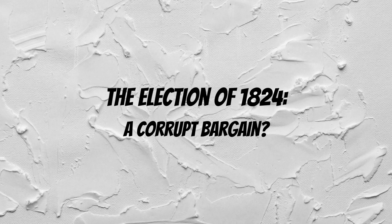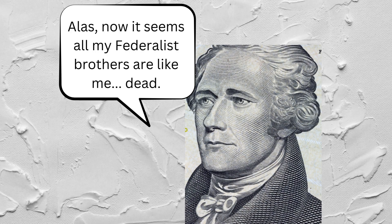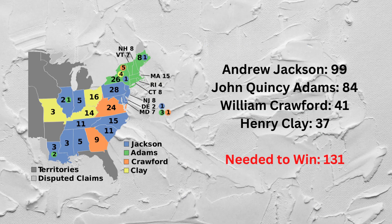The Election of 1824 sees the final elimination of the Federalist Party. No Federalists run in 1824, so essentially all the candidates run as Jeffersonian Democratic Republicans — dropping the Jeffersonian moniker at this point. We have four candidates running for president, all under the same party: Andrew Jackson, John Quincy Adams, William Crawford, and Henry Clay.